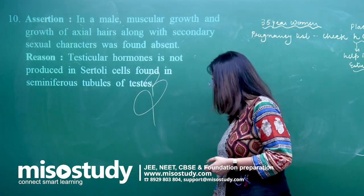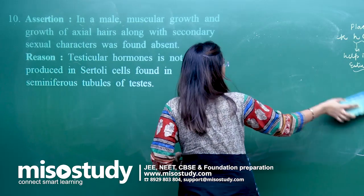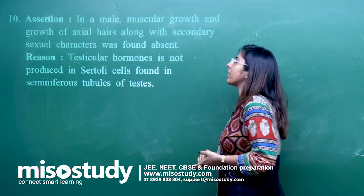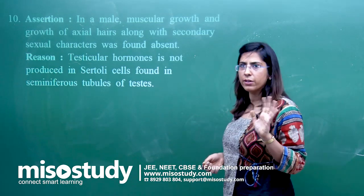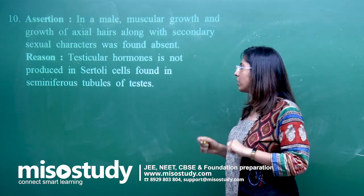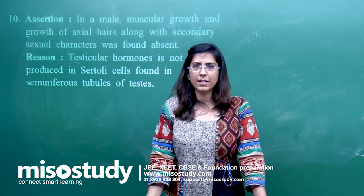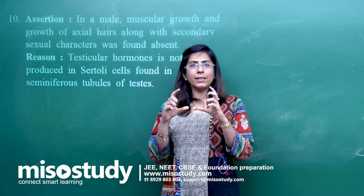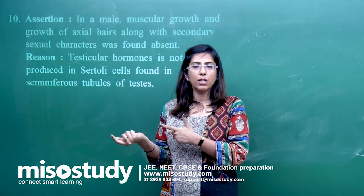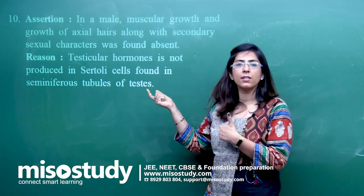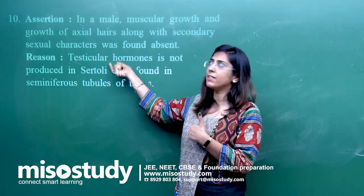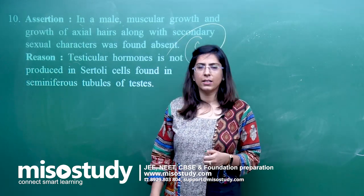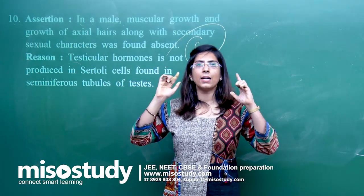Question 10: assertion — in a male, muscular growth, growth of axial hairs, and secondary sexual characteristics were found absent. Reason — testicular hormone is not produced in the Sertoli cells found in the seminiferous tubules of the testis. Secondary sexual characteristics are due to androgen, specifically testosterone. Testosterone is secreted by the Leydig cells, not the Sertoli cells. So the reason is incorrect and the assertion is right — answer is option C.